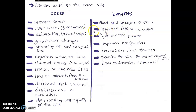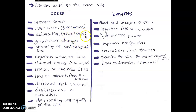Due to salinization, irrigation is sometimes not so effective. Then there are groundwater changes, also called secondary salinization. When the salty, saline water seeps through into the groundwater, it creates a secondary salinization process.